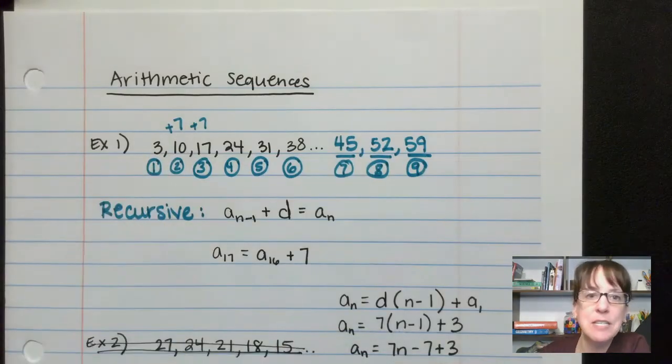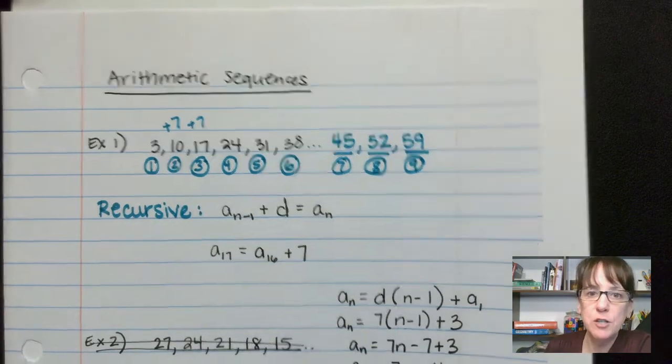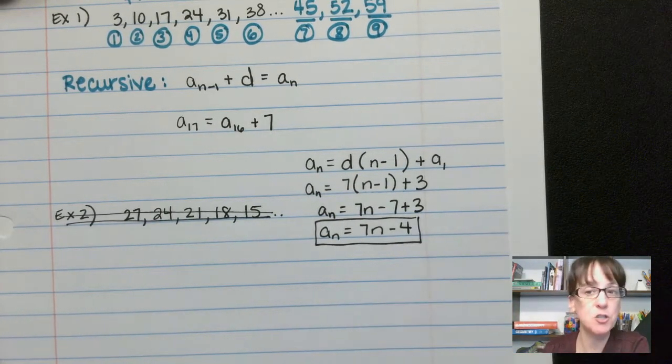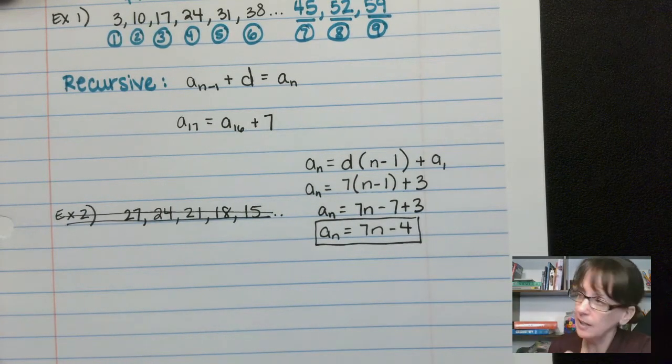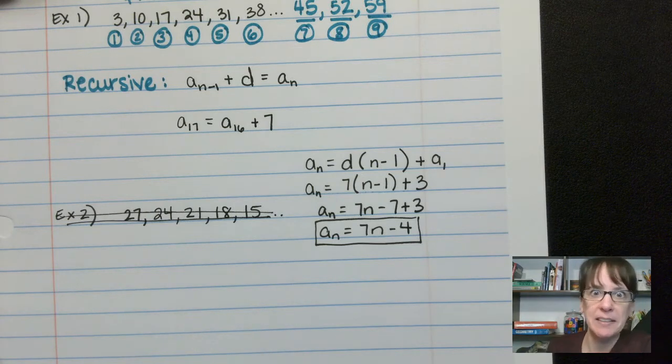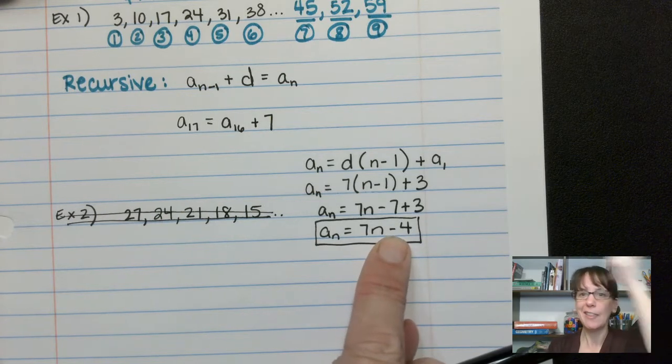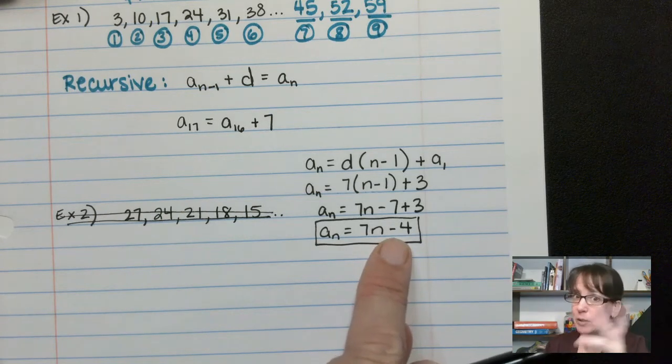Instead of just saying, hey, add 7 to the previous number, what we can do is say, hey, take the position number, whatever position I previously mentioned, 101 or 157 or something like that. You take that position number, you multiply it by 7, you subtract 4, that gives you your answer. So let's try 22.